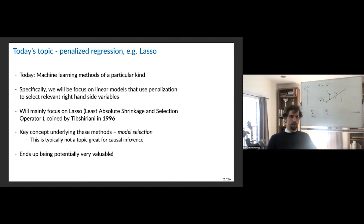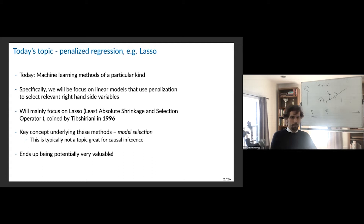Typically this isn't a great topic for causal inference. The question of causal inference is almost not something you can guide based on data — we don't know what variables affect what, and looking at observed data, there are many reasons why those might not reflect causal properties. We're going to talk about how they can be useful at the end of class, because there are some circumstances for causal inference where it can be really valuable.